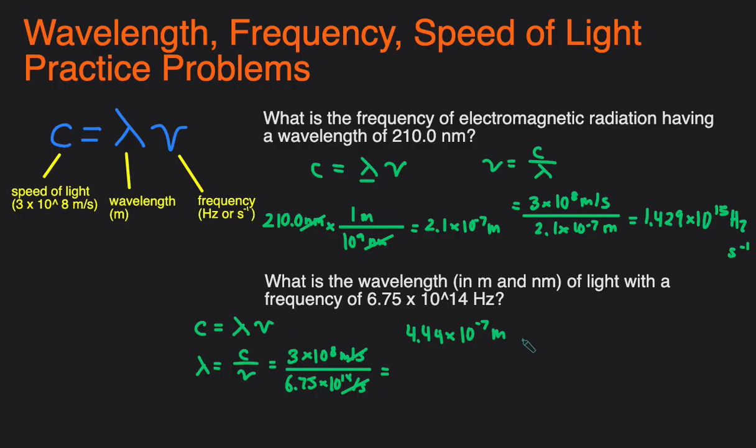So we can take that number and multiply by the conversion factor. There are 10 to the 9th nanometers in every one meter. Then meters cancel out and you're left with 444 nanometers. So this is the answer in meters and that is the answer in nanometers.